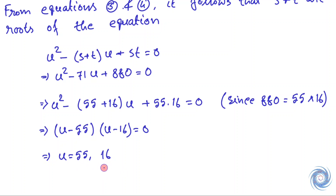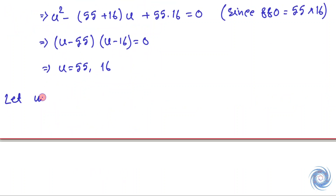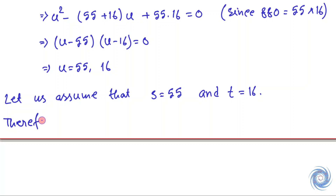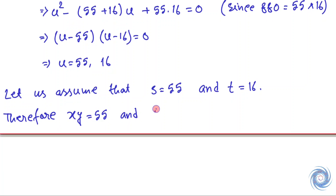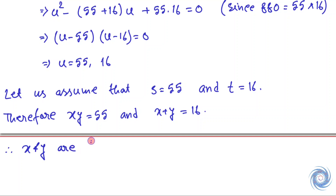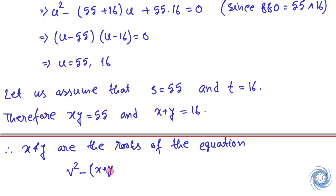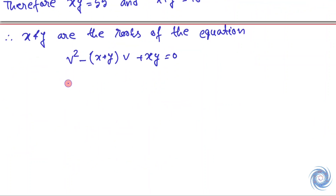Now let us assume that s = 55 and t = 16. Therefore we have xy = 55 and x + y = 16. So x and y are the roots of the equation v² - 16v + 55 = 0.